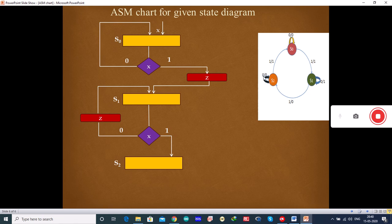Now, S2, when the input is 0, output is also 0. So, no need of any condition box. You will be drawing the decision box and when it is 0, input is 0, it goes to S2.